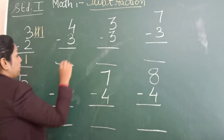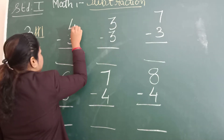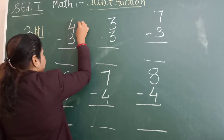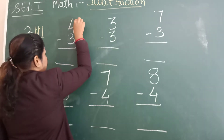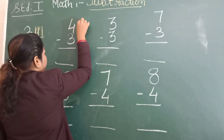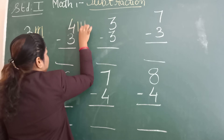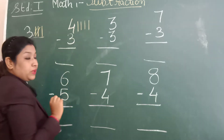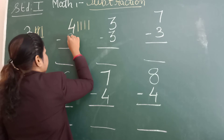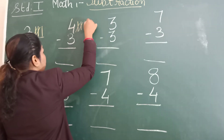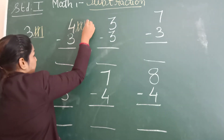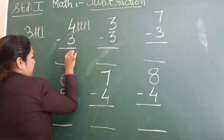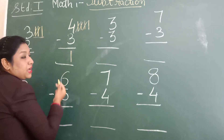Now the second one. Which number is this? 4. How many lines you will make? We will draw 4 lines: 1, 2, 3, 4. And how many lines you will cut? You will cut 3 lines: 1, 2, 3. How many remains? 1. So 1 is your answer.